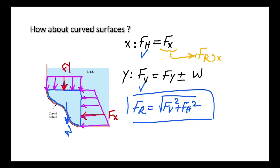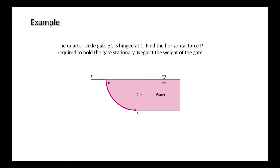Let's solve an example together to understand this better. In this example, we have a quarter circle gate which is hinged at point C, and we are going to find the force P required to hold this gate. The weight of the gate is negligible, which means when we consider the weight in our liquid block, we just have to put the weight of the water inside the liquid block. The first step is to find and choose a liquid block and then draw its free body diagram to obtain the hydrostatic force.